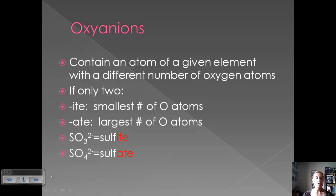For example, we have two oxyanions that contain sulfur and oxygen. The first one has three oxygen atoms and the second one contains four oxygen atoms. So SO₃²⁻ has less oxygen so it's sulfite. SO₄²⁻ has more oxygen so it gets the ATE ending making it sulfate.